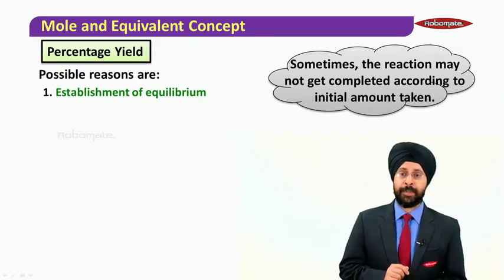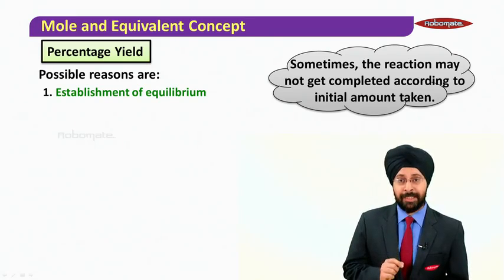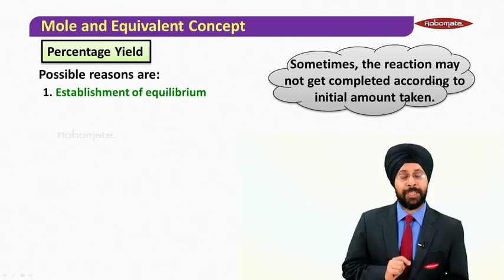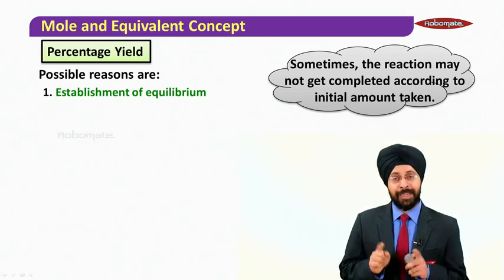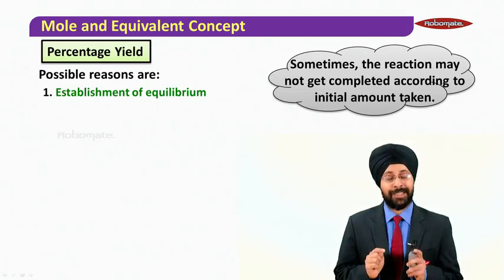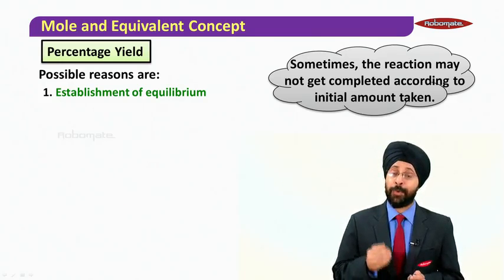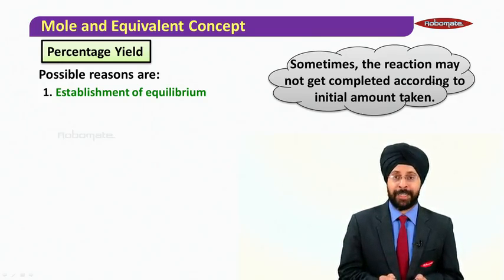The first possible reason is establishment of equilibrium. Now this chapter you will read later in chemistry. But let me tell you, the amount of reactants will be stabilized after one time. It will not increase. So that is called equilibrium. And therefore, you will not expect the whole reaction to go to completion.